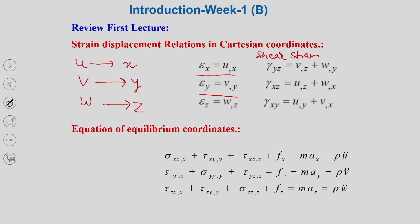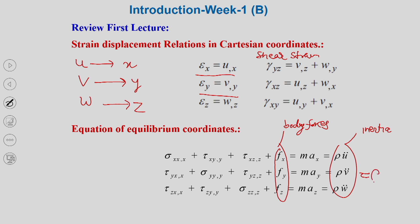I also gave you the relations for the equation of equilibrium, where these are the body forces — gravitational or electromagnetic forces that act over a volume — and these are the inertia terms. Most of the time when we are interested only in static behaviour, inertia can be taken as zero. Further, when body forces are neglected, you will find this set of relations equal to zero.